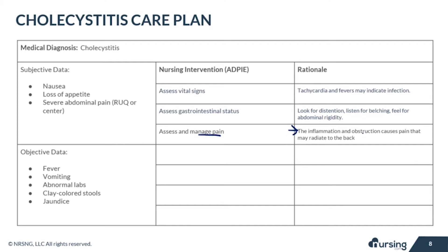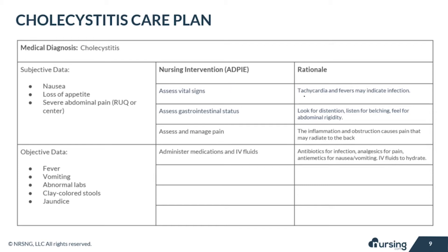Our next nursing intervention is to assess and manage your patient's pain. The inflammation and obstruction causes pain that might radiate to the back. You will also administer medications such as antibiotics for infections, analgesics for pain, antiemetics for nausea or vomiting, and IV fluids to help hydrate your patient while they're resting their bowels.